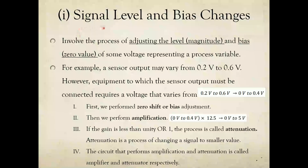The first type of signal conditioning is called signal level and bias changes. These two often work together. It involves adjusting the magnitude of the signal and biasing — meaning the signal should start from zero. For example, a sensor output may vary from 0.2 V to 0.6 V, but the output your system needs is in the range of 0 to 5 V, so you need to convert the signal to that range.